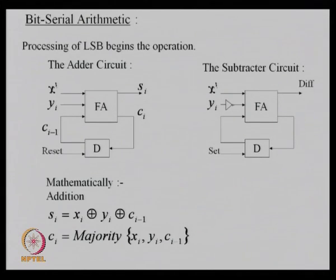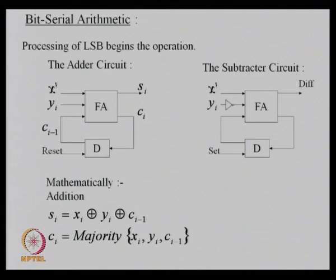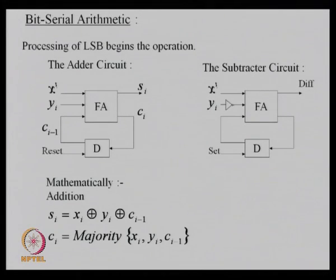Mathematically, the sum can be expressed as x_i XOR y_i XOR c_{i-1}, and c_i, the carry output, is essentially the majority of x_i, y_i, and c_{i-1}. For subtraction, instead of using ones' or twos' complement, you can simply input x_i and y_i_bar to the full adder, and the output will be the difference of x and y. Subtractor and adder circuits are similar, except one input to be subtracted is given as an inverted input.